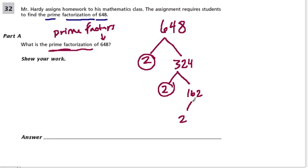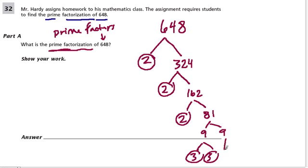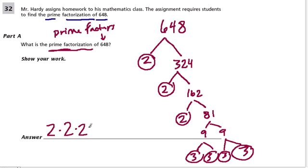2 times what is 162? Well, that's 81. Look at the number 81 — that's just 9 times 9, and each of those are just 3 times 3. So if we took these prime factors and multiplied them — 2 times 2 times 2 times 3 times 3 times 3 times 3 — we would get 648.